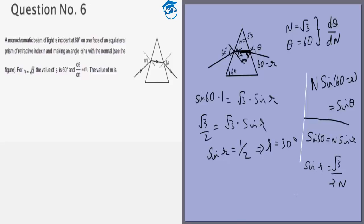Then sin r equals root 3 by 2n, that means cos r equals root of 1 minus 3 by 4n square.